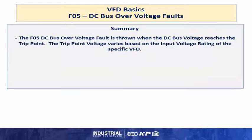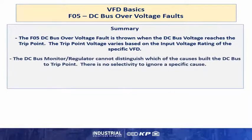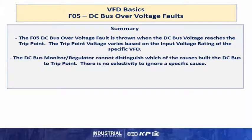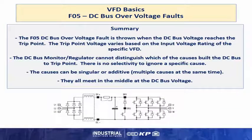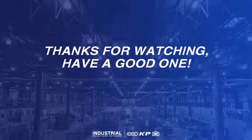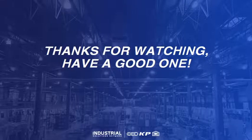In summary, the F05 DC bus overvoltage fault is thrown when the DC bus voltage reaches the trip point. Trip point voltage varies based on the input voltage rating of the specific VFD. The DC bus monitor regulator cannot distinguish which of these causes built the DC bus to the trip point; therefore there is no selectivity to ignore a specific cause. The causes can be singular or additive, meaning multiple causes at the same time — they all meet in the middle at the DC bus, raising the DC bus voltage level. This diagram shows how the DC bus is in the middle of the VFD and how both line and load side connections can contribute to issues. Thank you for watching, and if you have more questions, please contact your local CED technical consultant for power and drives.